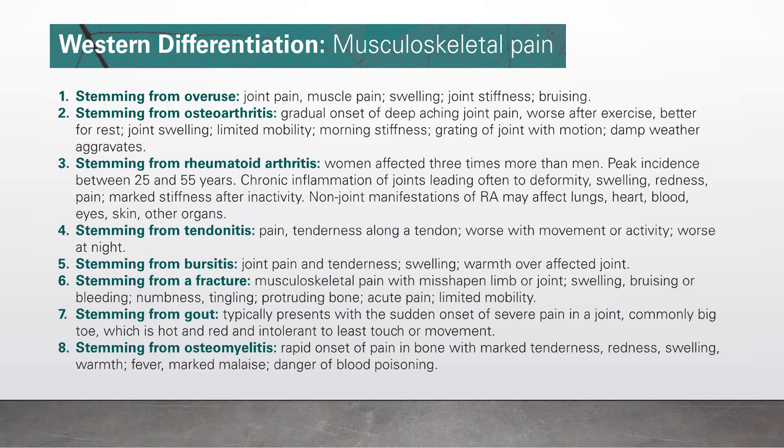Number seven, stemming from gout: typically presents with sudden onset of severe pain in a joint, commonly the big toe, which is hot, red, and intolerant to the least touch or movement. Number eight, stemming from osteomyelitis: rapid onset of pain in bone with marked tenderness, redness, swelling, warmth, fever, marked malaise, and danger of blood poisoning.